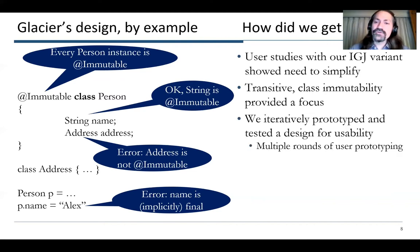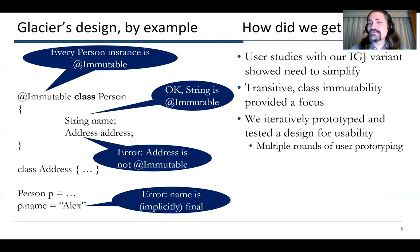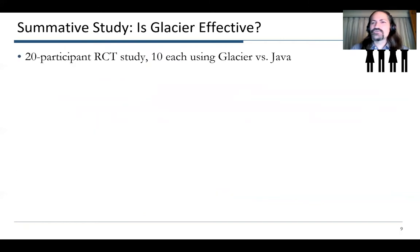Transitive class immutability was what we heard from our experts was the thing they really needed and lacked in current systems, and provided a focus so that we could get that simplicity by just focusing on this property. We then iteratively prototyped — our first design wasn't perfect, but we tried different designs with users, and when we found they were confused, we went back to the drawing board and fixed things. After multiple rounds, we ended up with something that was fairly usable.